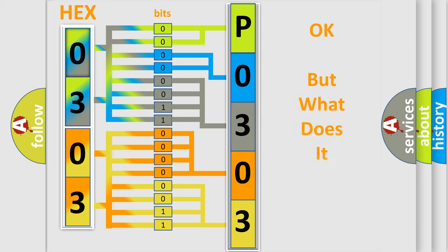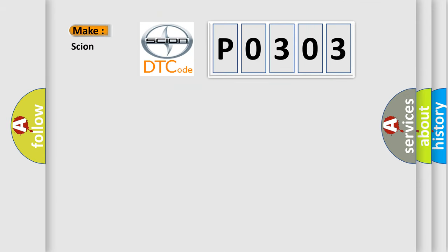The number itself does not make sense if we cannot assign information about what it actually expresses. So, what does the diagnostic trouble code P0303 interpret specifically for Scion car manufacturers? The basic definition is: Parking sensor 6 faulty signal.